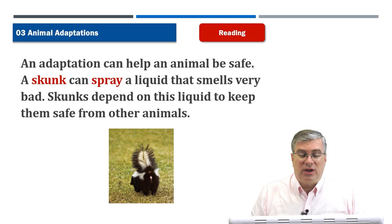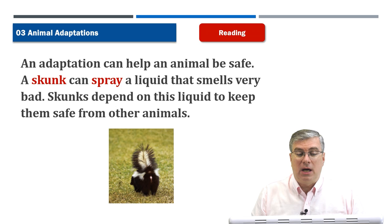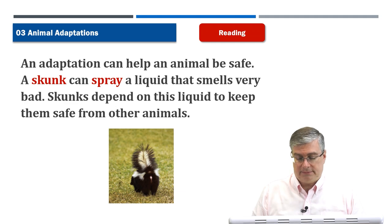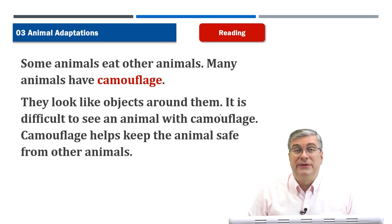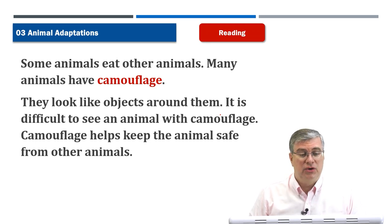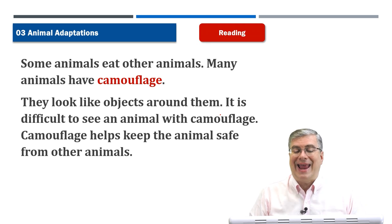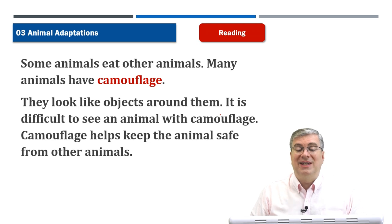'An adaptation can help an animal be safe. A skunk can spray a liquid that smells very bad — skunks depend on this liquid to keep them safe from other animals. Many animals have camouflage — they look like objects around them. It is difficult to see an animal with camouflage. Camouflage helps keep the animals safe from other animals.'